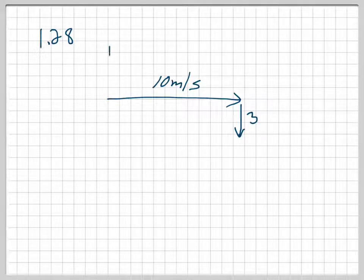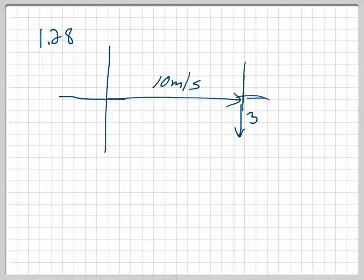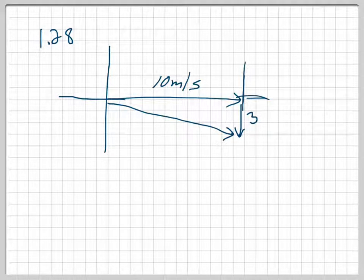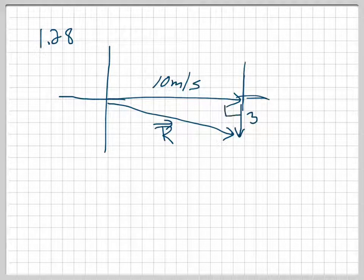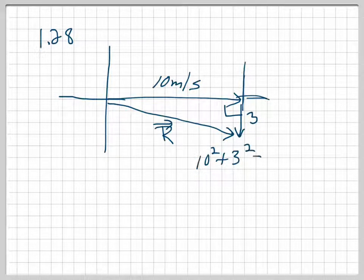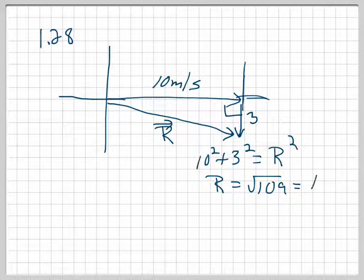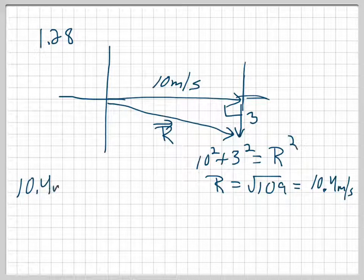Normally what I do is draw my grid system, and whenever I come to the head of a vector I sketch in another grid so I can see where to add the next vector. The resultant goes from the tail of the first to the head of the last. This is a right triangle, so it's pretty easy — I can use the Pythagorean theorem. I do 10 squared plus 3 squared equals R squared, and R equals the square root of 109, which is about 10.4 meters per second. That's the magnitude — but this is not a velocity, it's a speed. A velocity needs a direction.